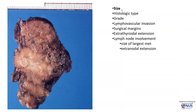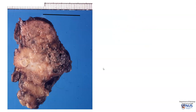Let's start off with size, and usually we would measure this grossly. So in this instance, the tumor is 2.3 centimeters. We would later confirm the extent of the tumor microscopically, as sometimes the tumor extends a little bit further or less than what we thought, and then we would follow the most accurate measurement.